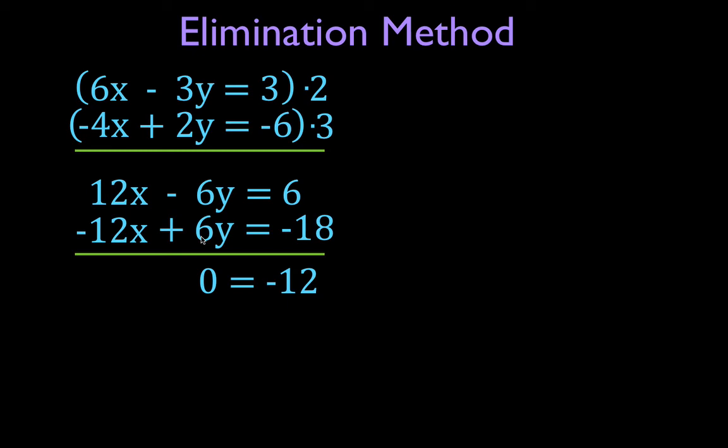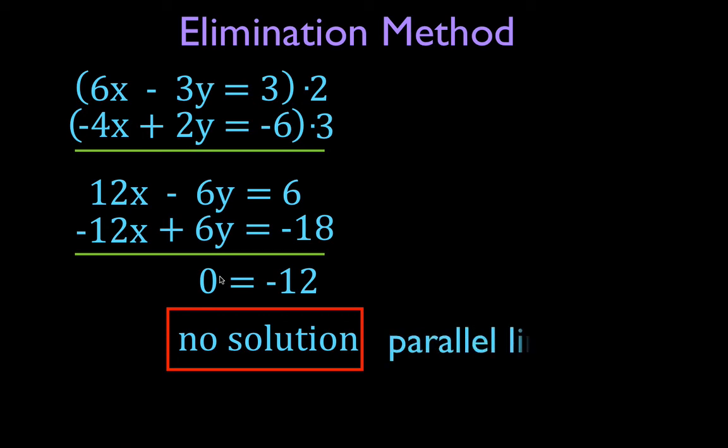Now, if you do this and you eliminate both x and the y values, then that tells you that these two lines have no solution. And that tells you that if they have no solution, that means they don't cross. And the only kind of lines that don't cross are parallel lines.